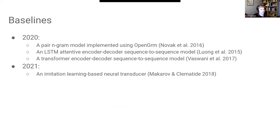In the first year, we had three different baselines, but maintaining all three was a lot of work — we really should have kept it simpler. I implemented a pair-ngram model using OpenGRM, a classic generative joint model. It doesn't make any sense if you're a model snob, but it works great. We also had two types of neural network models: an LSTM encoder-decoder and a transformer model.